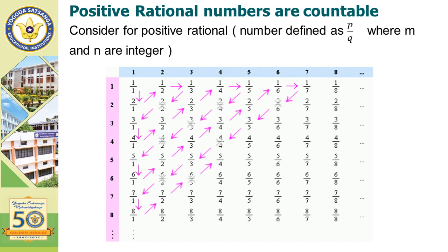We can prove that positive rational numbers are countable. For this, we arrange the numbers in a table with rows and columns — rows represented as 1, 2, 3, 4, 5, 6, 7, 8 and columns also as 1, 2, 3, 4, 5, 6, 7, 8. The first row consists of the numbers 1/1, 1/2, 1/3, 1/4, 1/5, and so on. The second row contains 2/1, 2/2, 2/3, 2/4, and so on.